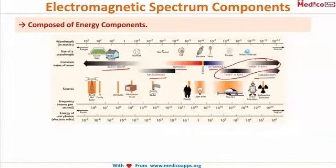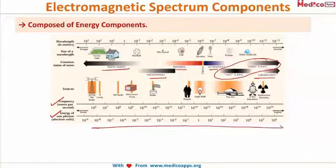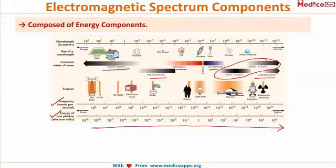In this diagram, look at the last two lines showing frequency and energy. Both are increasing as we move forward. So according to this, radio waves have the least frequency and least energy, while gamma rays have the highest frequency and highest energy.